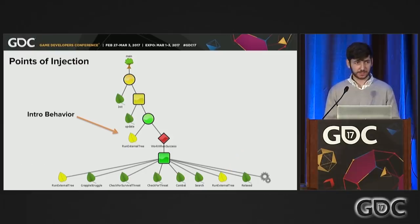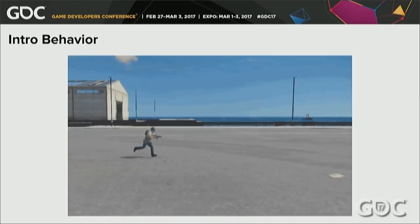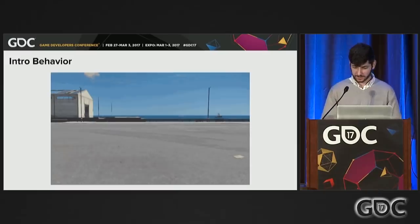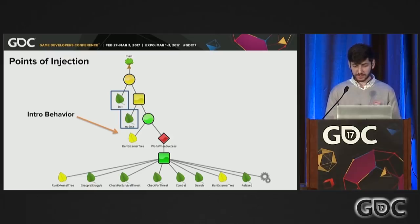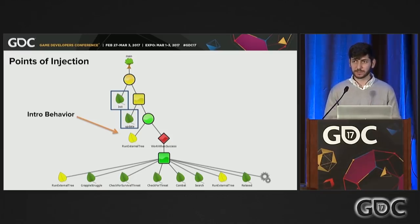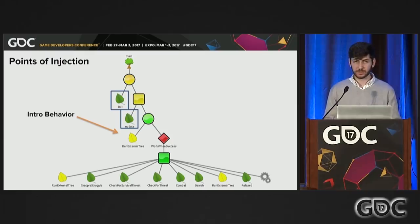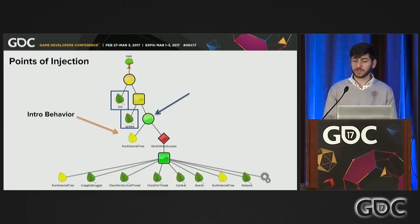Intro behaviors were the first and most classic use case — on spawn, do X. Here I spawn a rebel and give him an intro behavior to run to the right side of the screen. Note that the run external tree node for intro behaviors still takes place after the init and update sub-trees have had their chance to run. This is because the init and update sub-trees handle complex important tasks like target selection, and it's good for the micro behaviors to rely on the fact that the main behavior tree has already taken care of these things. The intro behavior is under a selector that ensures it only gets attempted once on spawn and never needs to be checked again after that.